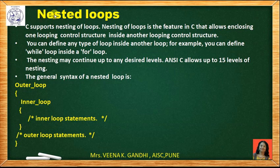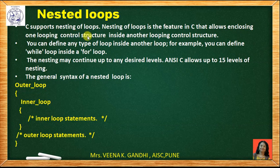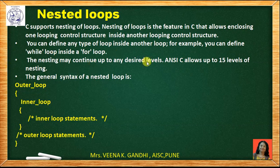Next topic is nested loops. C supports nesting of loops. Nesting of loops means you can embed one loop inside another loop. Nesting of loops is a feature in C that allows the enclosing of one looping control structure inside another looping control structure. You can define any type of loop inside another loop — for example, a while loop inside a for loop. This nesting may continue up to every desired level, but C supports up to 15 levels of nesting.